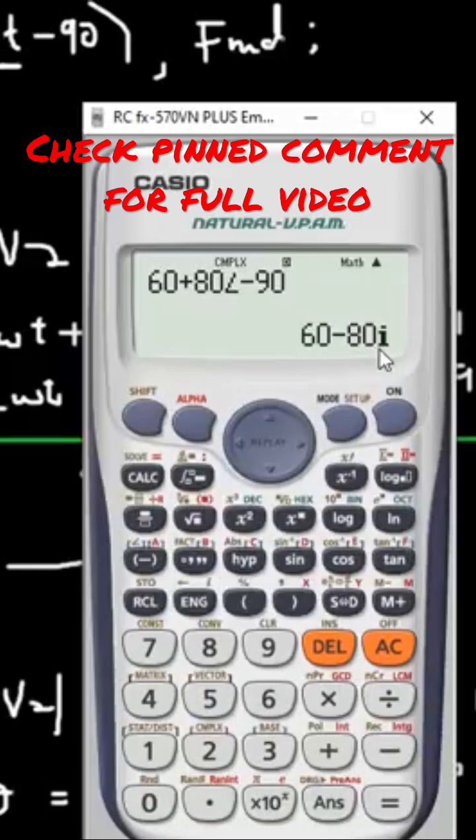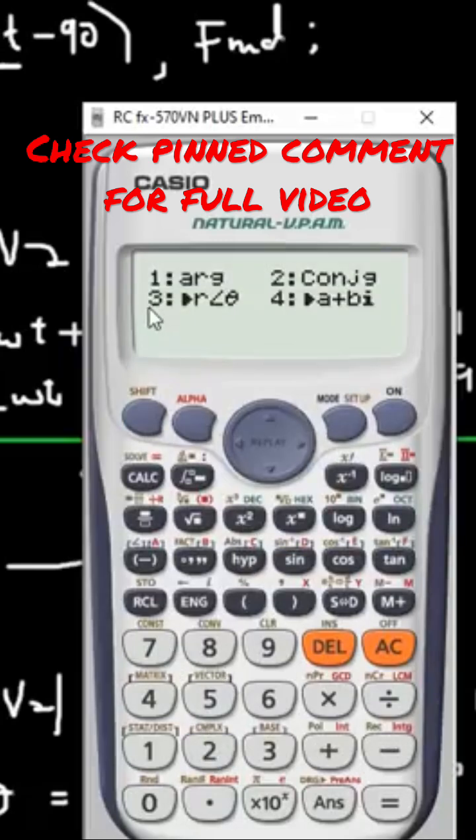Okay, so for 60 minus 80i, you have to convert it into modulus and argument. So you click on shift, and then you click on what? What do you click on?